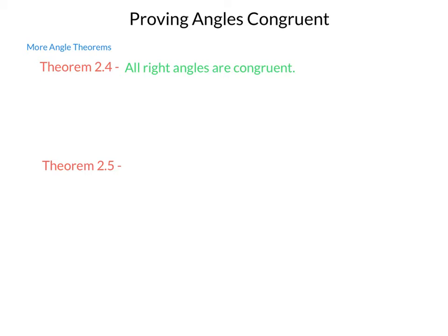There are more visual or graphic ways of proving this one. And again, perhaps another time run through that. Theorem 2.5 tells us if two angles are both congruent and supplementary, then each is a right angle.